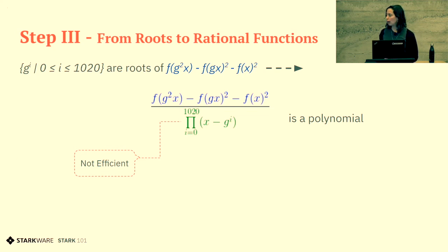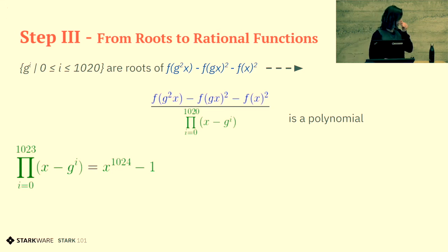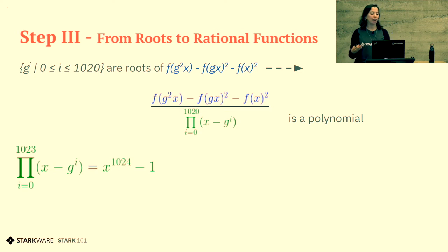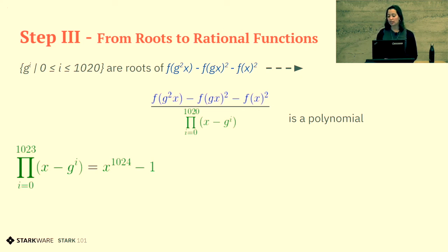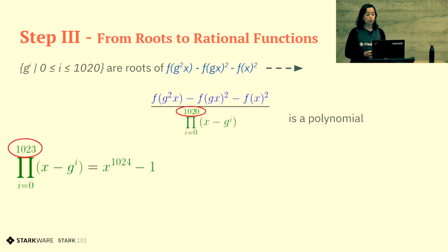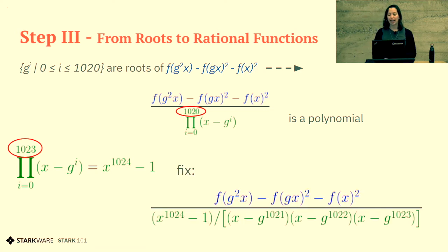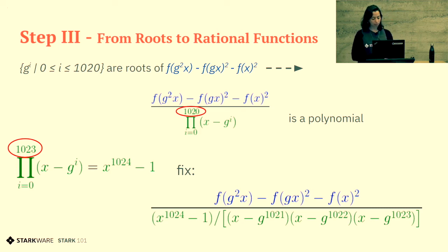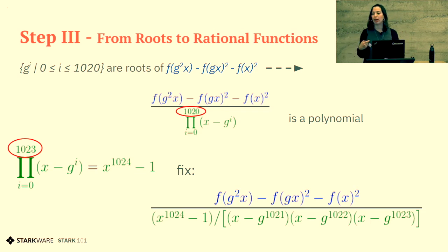So there is a small trick: because of how we picked g, the product of (x − g^i) for i between 0 to 1023 gives us a simple polynomial: x^1024 − 1. This is much easier to compute. To use it, I need to divide by the unwanted factors, giving the rational function at the bottom. For a computer, it is much easier to compute it, so we are going to use this format instead.